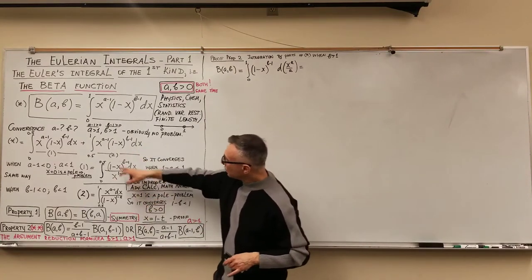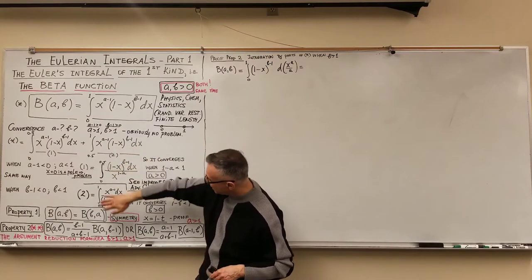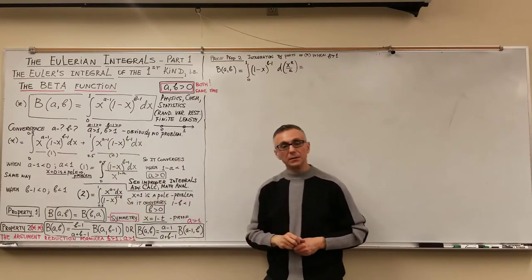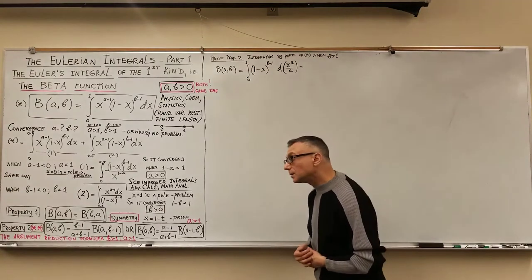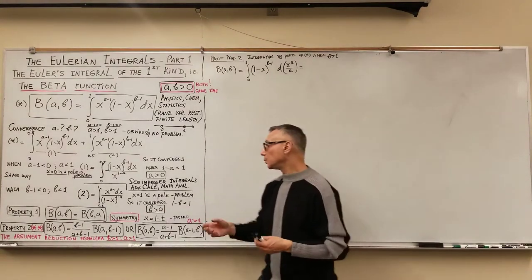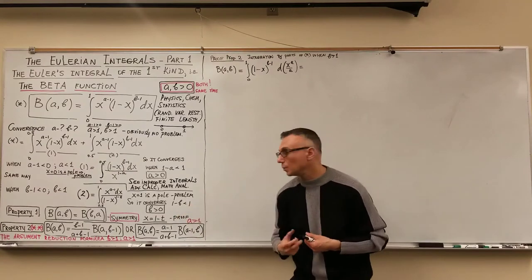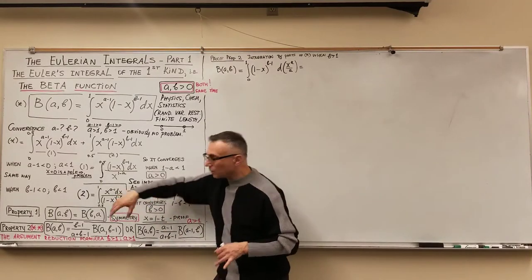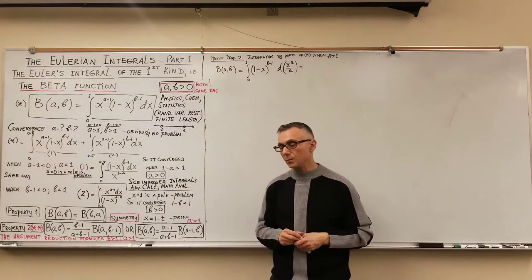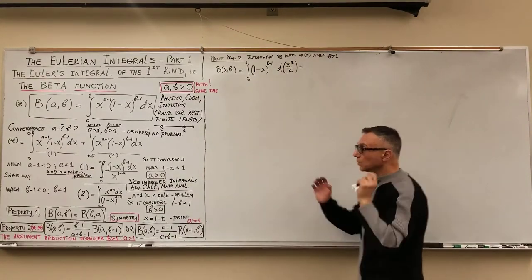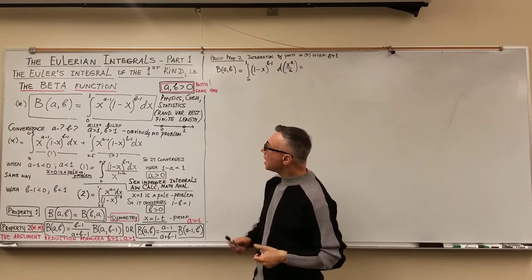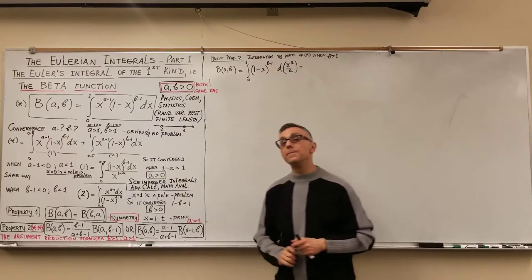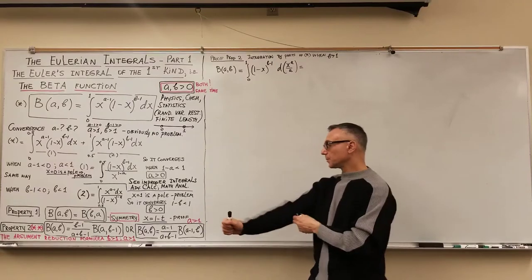Similarly, the second part can be rewritten with x to the power a minus 1 over 1 minus x to the power 1 minus b in the denominator. When x equals 1 it's a pole. It converges when 1 minus b is less than 1, which means b greater than 0. So now we have a wider range of convergence: not just a and b greater than 1, but a greater than 0 and b greater than 0.